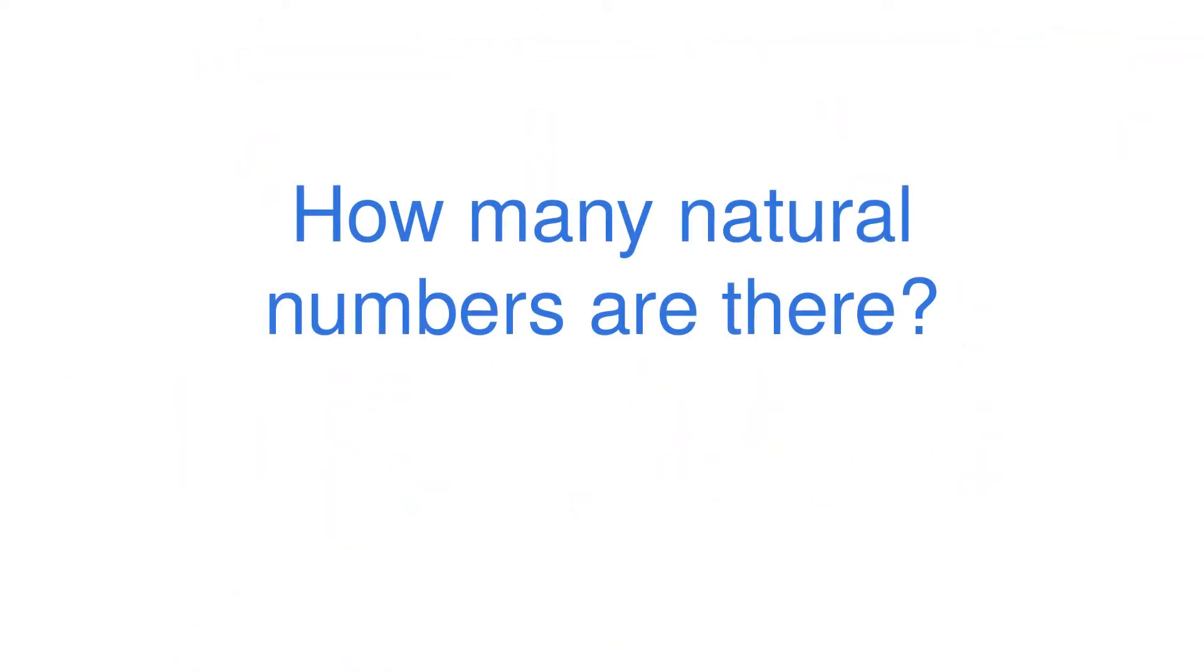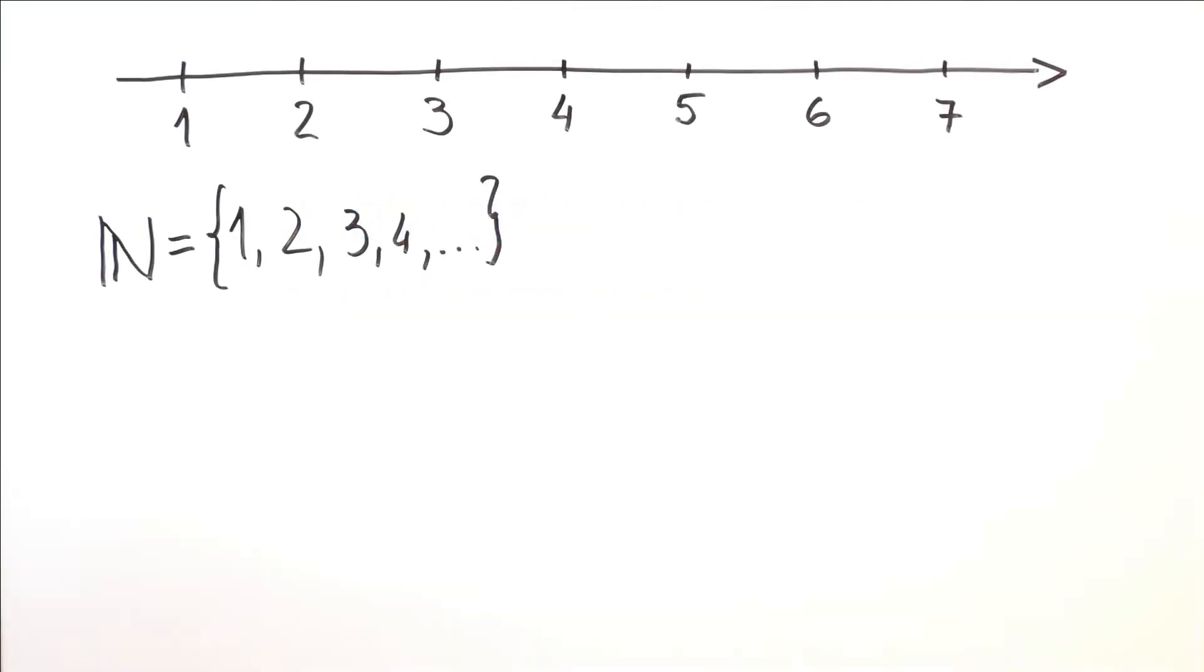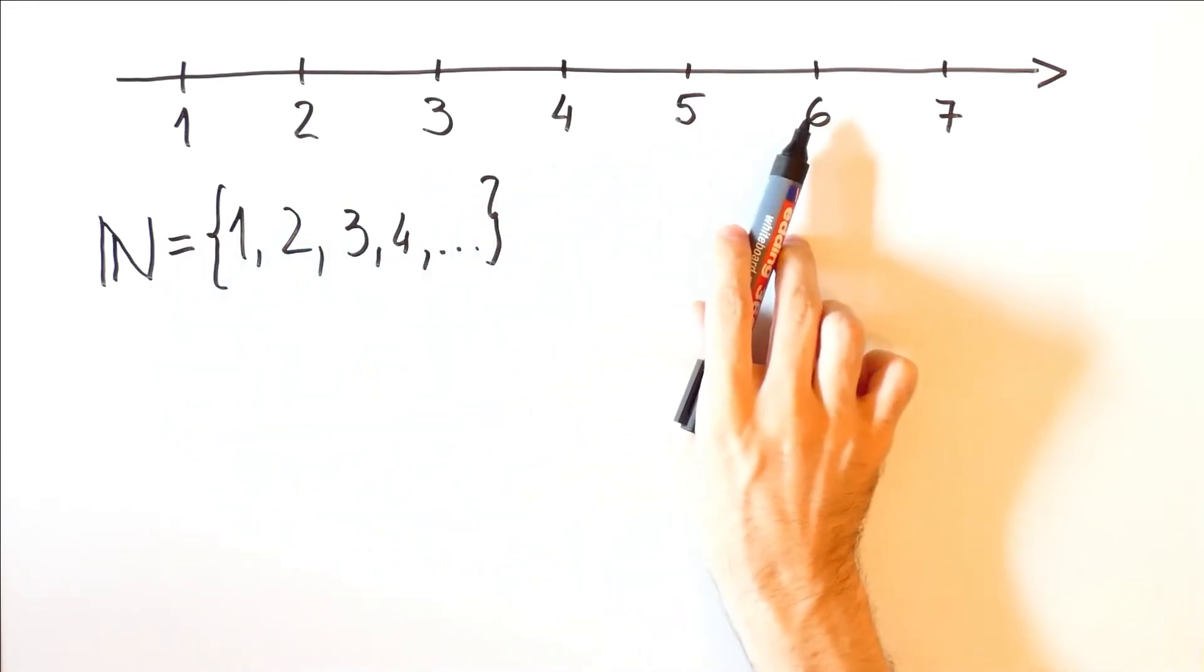How many natural numbers are there? Well there are infinitely many of them because regardless of how many we count there will always be the next one and the next one and so on.